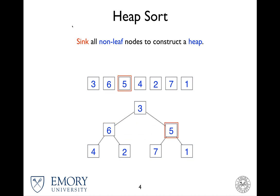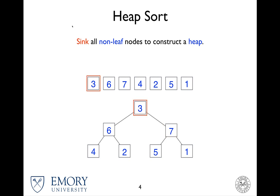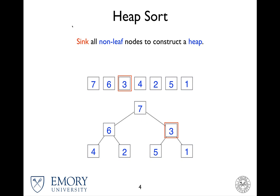Now move on to 5. The maximum key of the children is 7, so we do the swap. So we are done sinking for that level now. We move on to the upper level, which is the root. So 3 gets compared to 6 and 7 — 7 is the maximum, so swap. Once we have done this, this binary tree has become a heap.